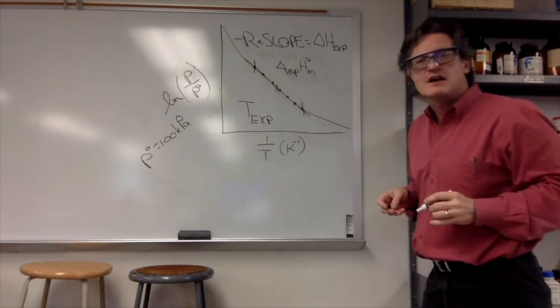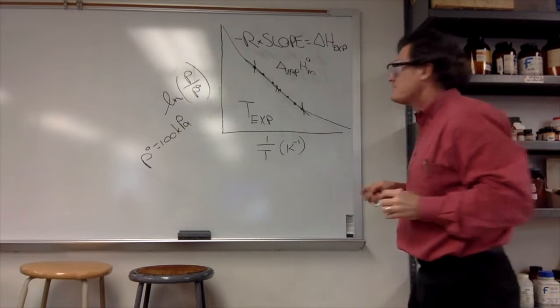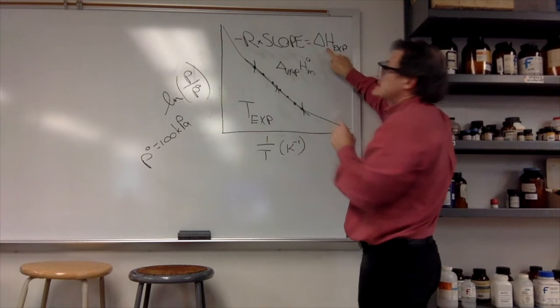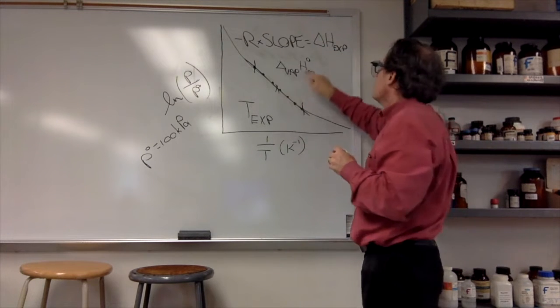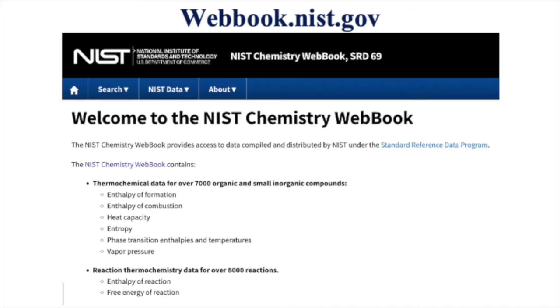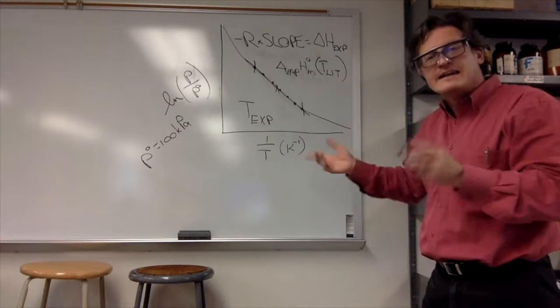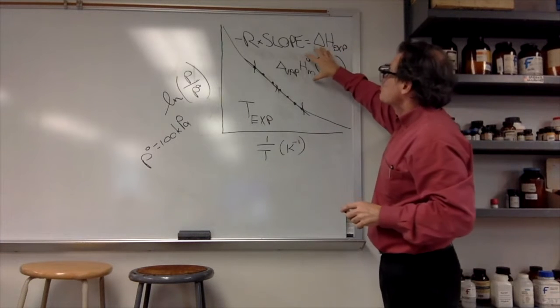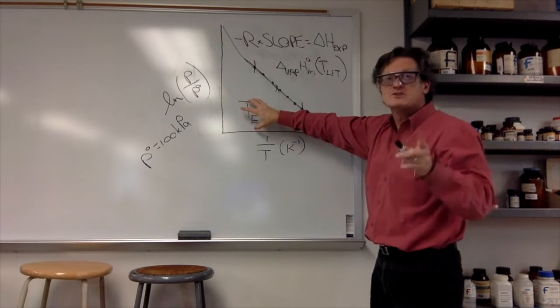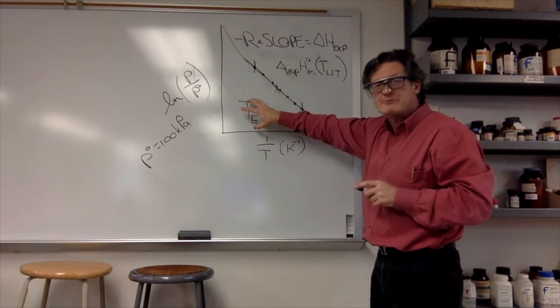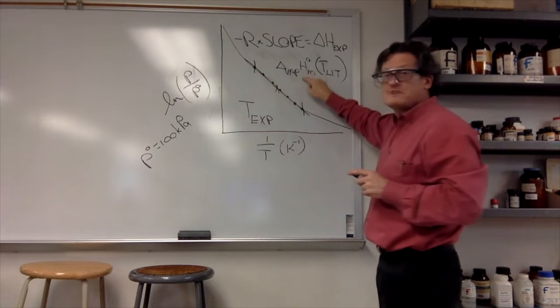We have T_experimental in the middle—it's the average of the high temperature and the low temperature. Our experimental value pertains to T_experimental, but the one we looked up in the NIST WebBook is probably taken at some different temperature.